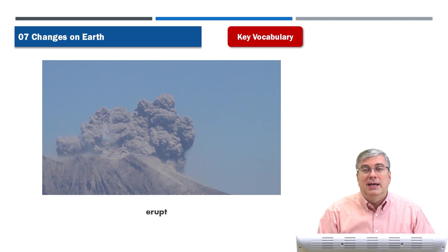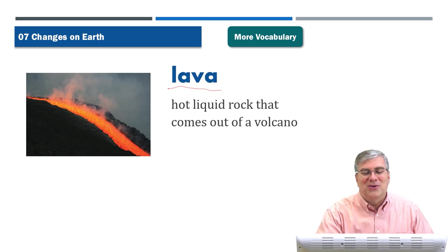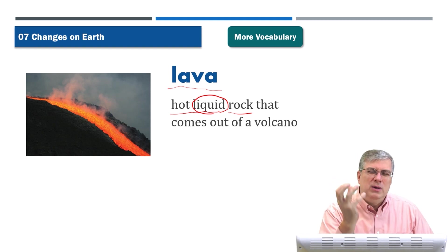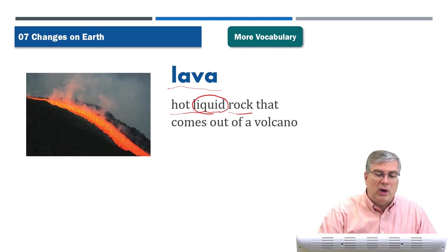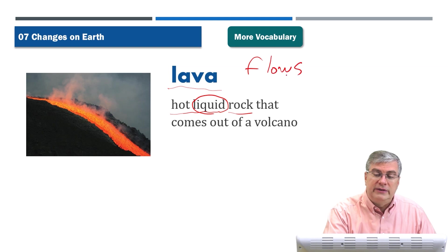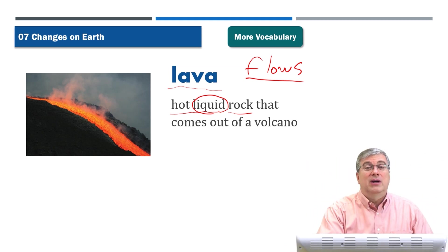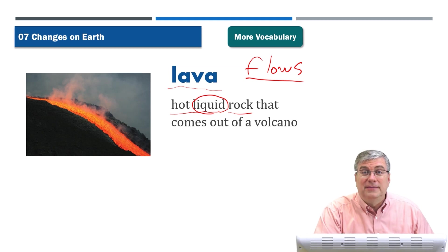Finally, 'lava' is hot liquid rock — rock that has become a liquid due to extreme heat. It appears red and produces a lot of steam because any moisture it touches instantly vaporizes. Lava flows — that's what they're called — can be seen in Hawaii, where they travel down to the ocean creating enormous steam clouds. It's actually a tourist attraction there. Lava is a hot liquid that comes out of a volcano, and those are all our vocabulary words for this lesson.